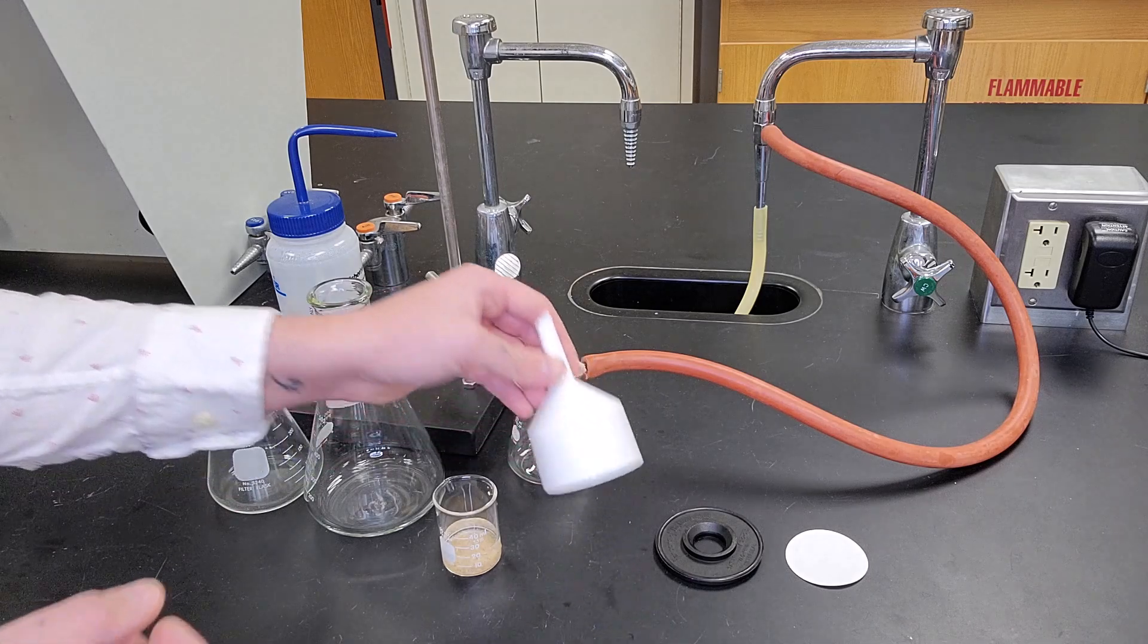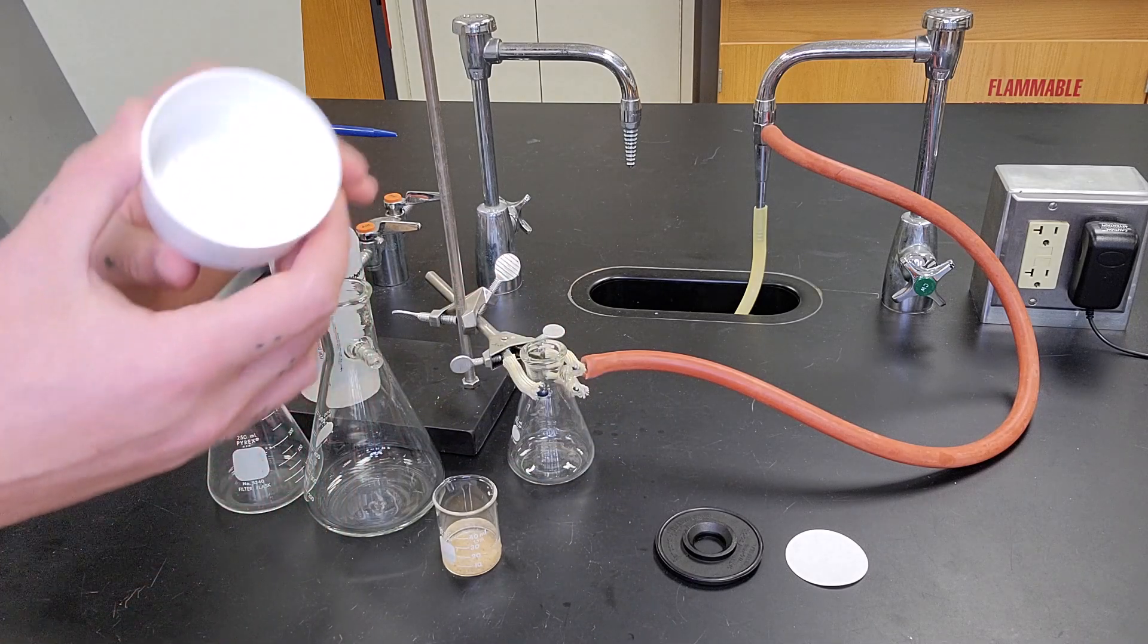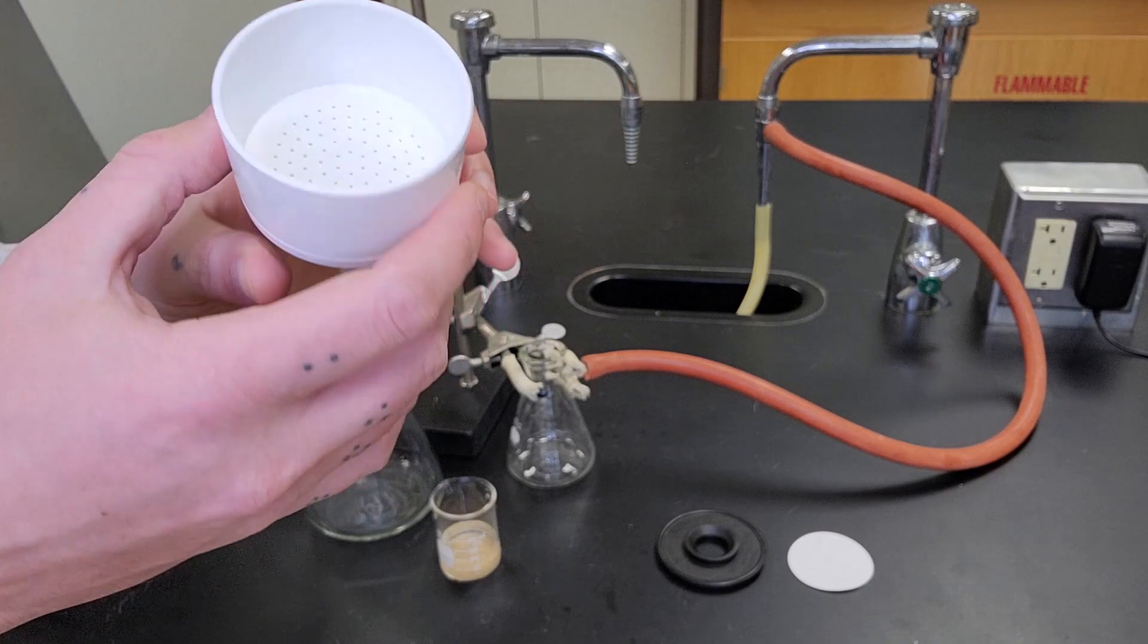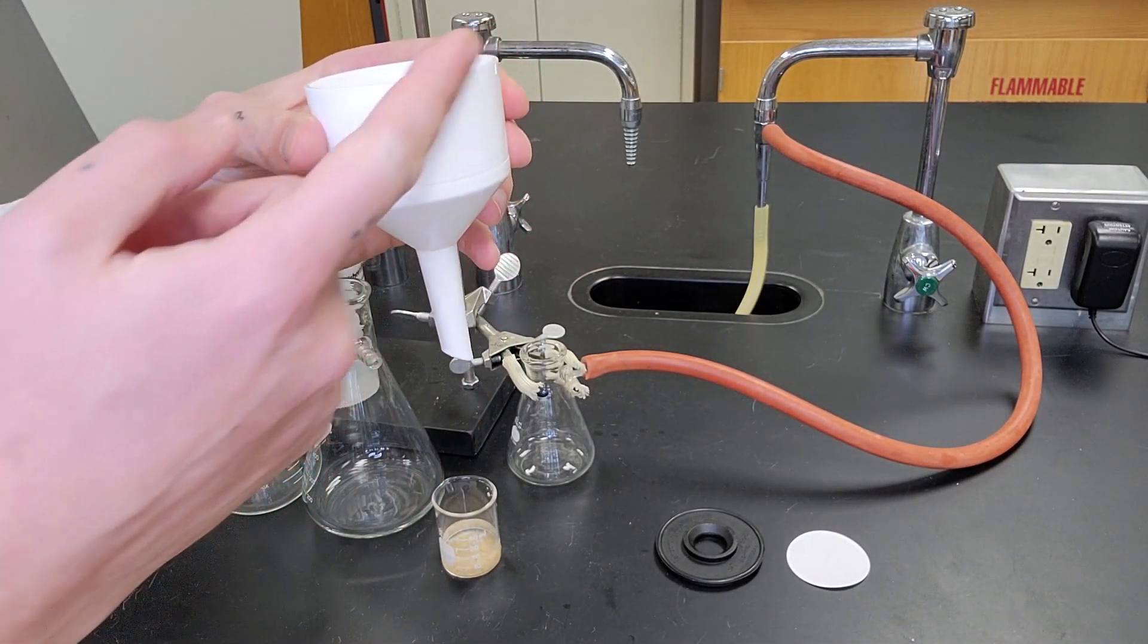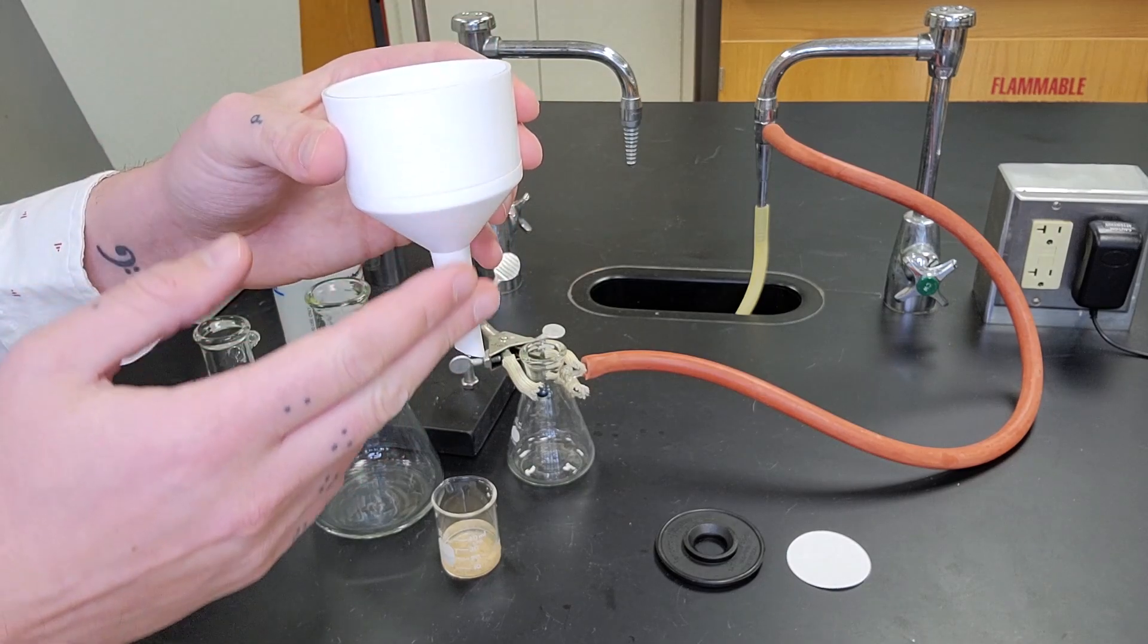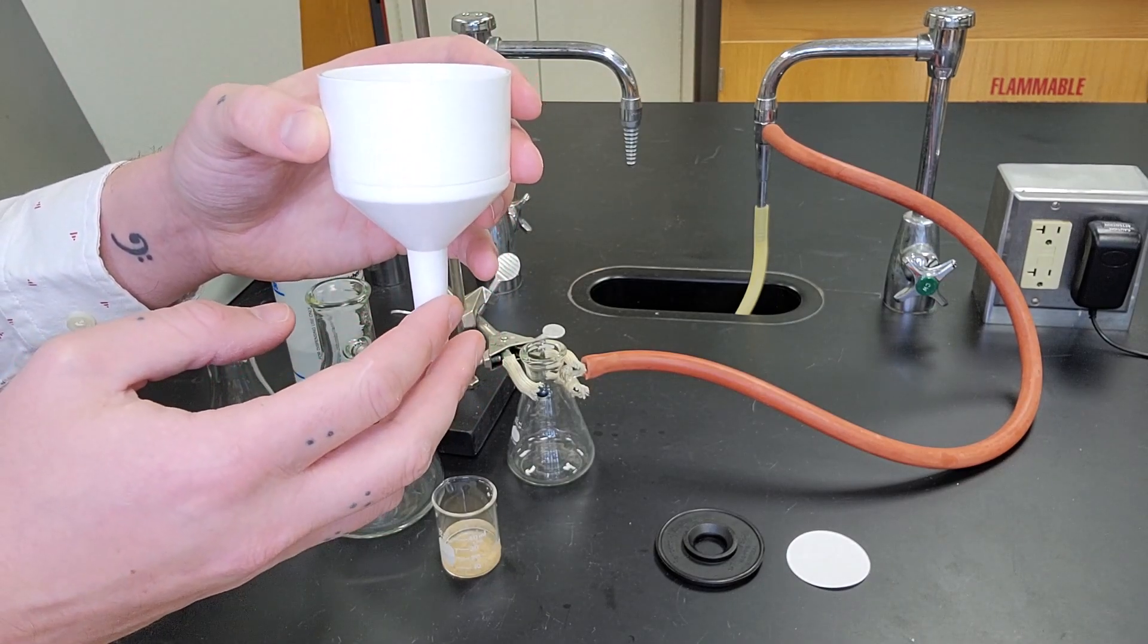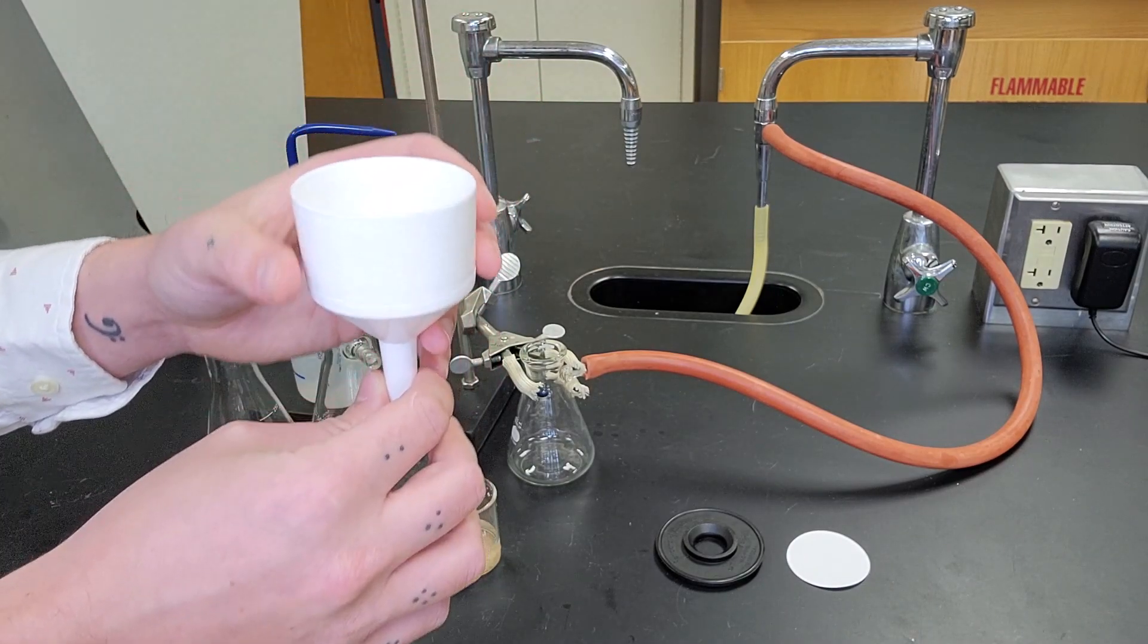Now the piece that actually does the filtering is called the Buchner funnel. The Buchner funnel is similar to a regular funnel where it's got a top part that you can pour into and a narrower end at the bottom to filter into the flask.